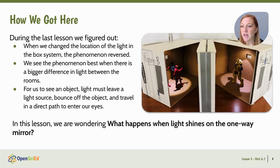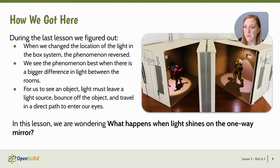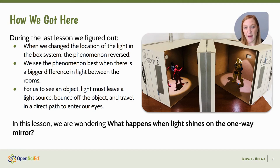In lesson two, we figured out that when we change the location of the light in the box system from room A to room B, the phenomenon reverses as well. We also see the phenomenon best when there's a bigger difference in light between room A and room B. For us to see an object, we have to have light — light must leave the light source, bounce off the object, and travel in a direct path to our eyes. So in this lesson, we're wondering what happens when light shines on the one-way mirror material.